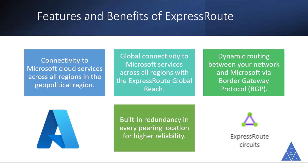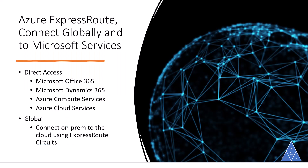There are several benefits to using ExpressRoute as a connection service between Azure and on-premises networks: connectivity to Microsoft cloud services across all regions in the geopolitical region, connectivity to Microsoft services across all regions with ExpressRoute global reach, dynamic routing between your network and Microsoft via border gateway protocol, and built-in redundancy in every peering location for higher reliability.